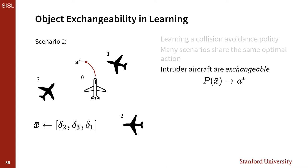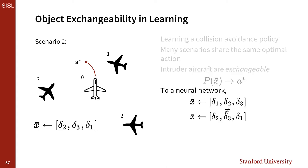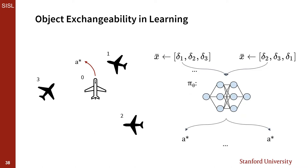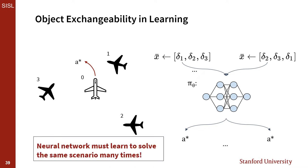While it's intuitive to us as humans that simply changing the tail number or paint job on an intruder aircraft wouldn't change the behavior we should take, unfortunately to a neural network these are very different states. Mathematically, the vector delta one, two, three doesn't necessarily equal the vector two, three, one. This means that when training our neural network policy, we have to learn to map delta one, two, three to a star, delta two, three, one to a star, and every permutation thereof to the same optimal action. Essentially, our neural network has to learn to solve the same scenario many times for every possible permutation of aircraft orderings.